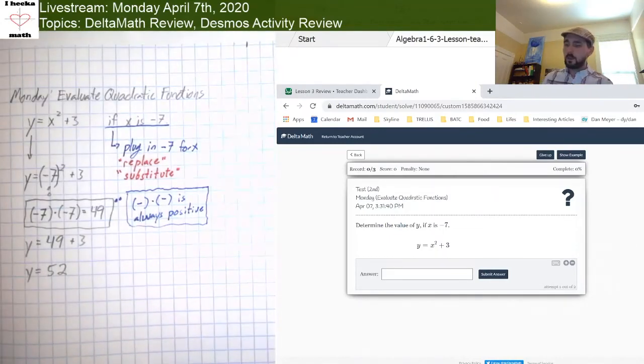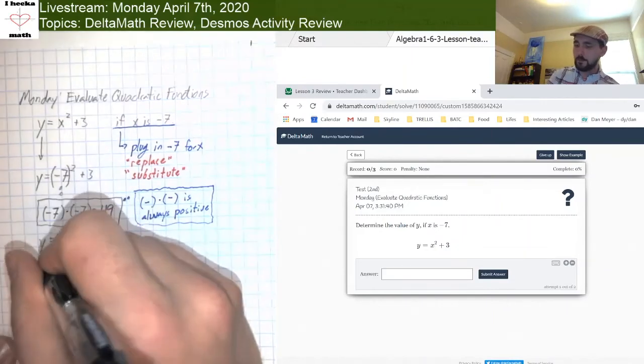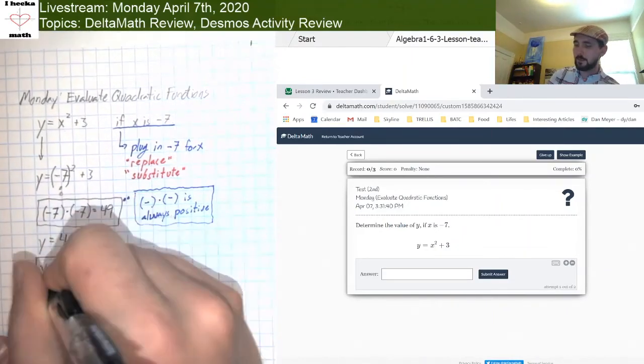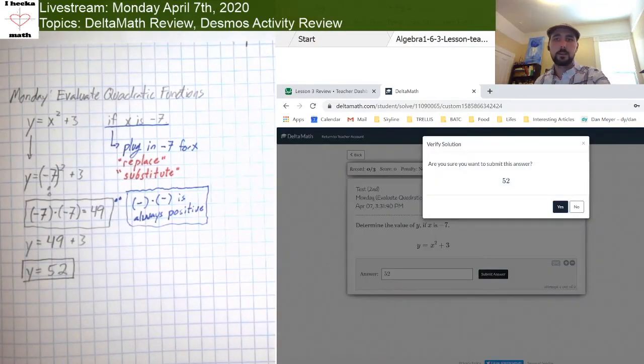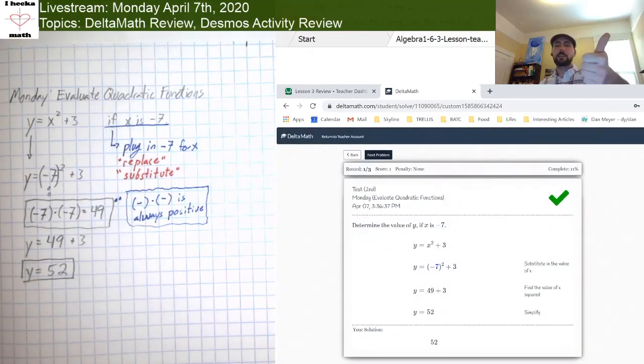All right. And then 49 plus 3 is 52. So this is our final answer. Let me type that into the computer. 52. Submit. Yes. Green checkmark. Feels good. Okay. So that's this one.